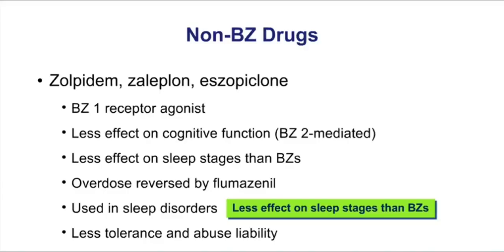Name some drugs that can be antidoted by Flumazenil, but those drugs are not benzodiazepines. A wrong answer would be barbiturates or ethanol, but a correct answer would be zolpidem, zaleplon, or eszopiclone — the Z drugs. Because of the less effect on BZ2 receptors, you're going to see less tolerance and abuse liability with these drugs.